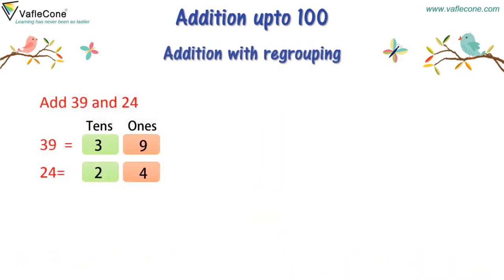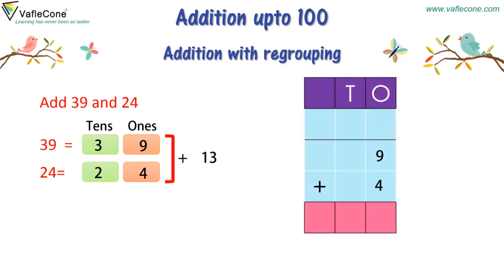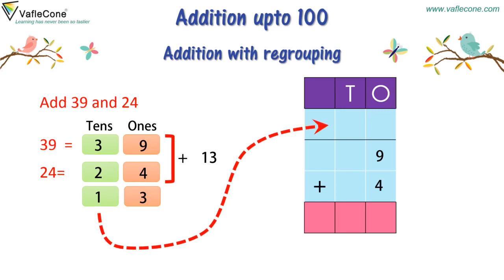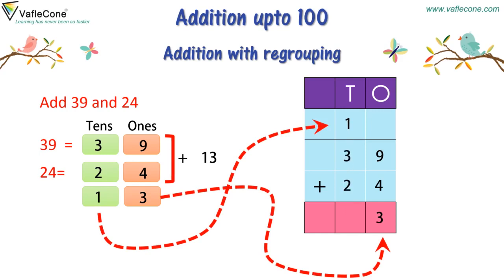Addition with regrouping is similar to what we did before. But here, when we add numbers at the ones place — that is 9 and 4, which is 13, or 1 tenth and 3 ones — we need to place 1 at the tenths place and 3 at the ones place. Then, when we add 3 and 2, we will have 1 extra from the regrouping of 13. So we add 1 plus 3 plus 2, which is equal to 6. So the answer is 63.